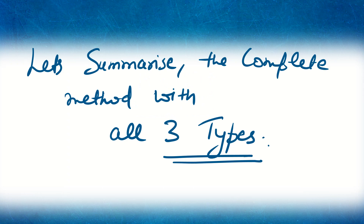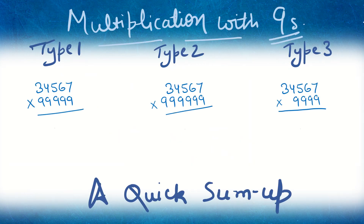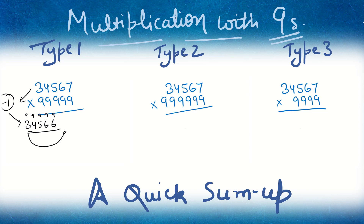Now let's summarize the complete method with all three types, using the same first number throughout. In Type 1: subtract 1 — you get 3,4,5,6 as the LHS. Then subtract each digit from 9: 9−3=6, 9−4=5, 9−5=4, 9−6=3, 9−6=3. That's Type 1, where we had an equal number of 9s.